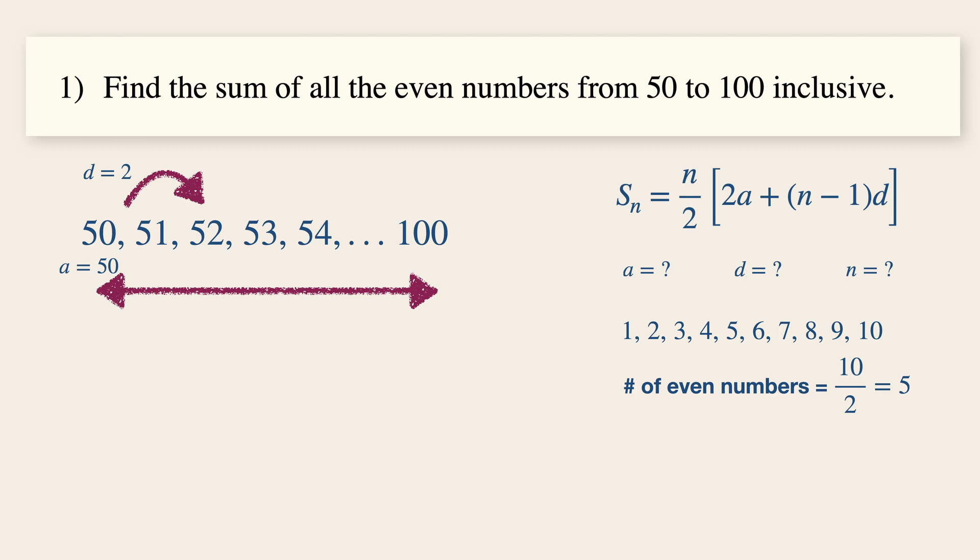Similarly, for the number of even terms between 50 to 100, it is 100 minus 50 divided by 2. However, do remember to include the term 50 as required by the question. So the total number of even terms is 26 instead of 25. All we need to do is to add a 1 over here.